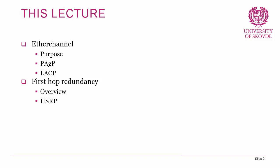We're also going to look at first hop redundancy, which is used to have redundant default gateways. We'll cover an overview of different protocols and the reasons for using them, and we'll look at HSRP, which is the first hop redundancy protocol used in this course.